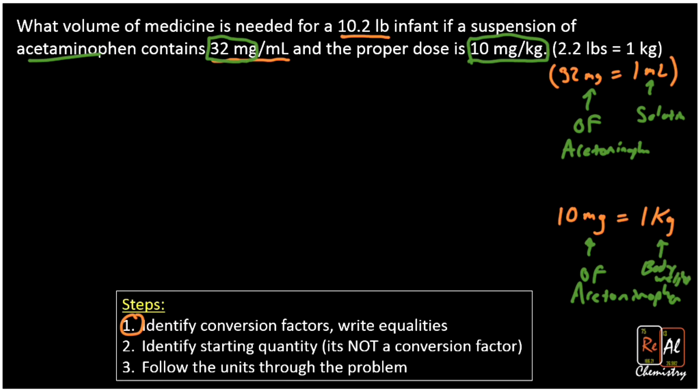With that in mind, we're ready to go ahead and start solving this problem. Remember, the main goal is to give an infant the correct amount of medicine. So pretty important problem to be able to do well, say, if you're a nurse. All right, so identify your starting quantity. Now here, if we hadn't already identified the conversion factors, you might be confused as to which number to start with. But now that we've identified the conversion factors, it's pretty plain that we should start with the 10.2 pounds. Remember, our starting quantity is always going to be a simple thing with just one unit, not one of our conversion factors. So 10.2 pounds is what we're going to start with.